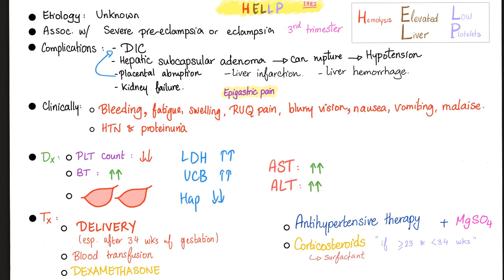Treatment: delivery, especially after 34 weeks of gestation, though delivery is not always the answer and depends on many variables. Since H is hemolysis, blood transfusion can help. Since the etiology is unknown — when doctors don't have a clue, they give steroids to you. Give antihypertensive therapy for the hypertension. For eclampsia, which equals seizure, give magnesium sulfate. Magnesium sulfate is also used to treat a certain cardiology condition — do you remember? Let me know in the comment section.